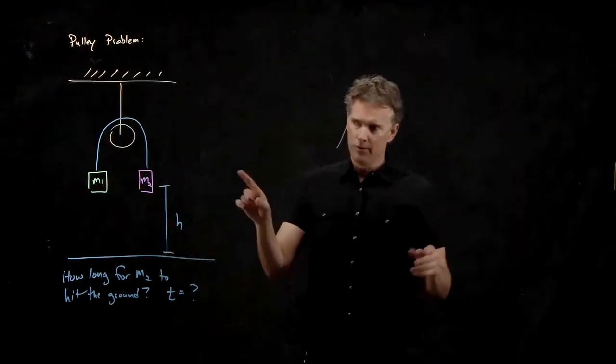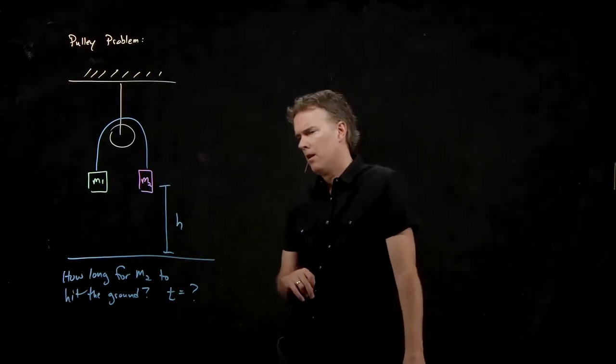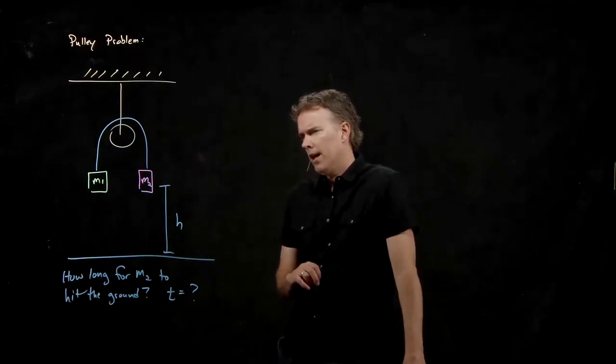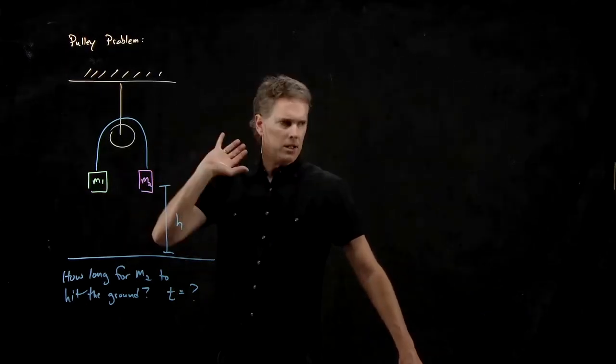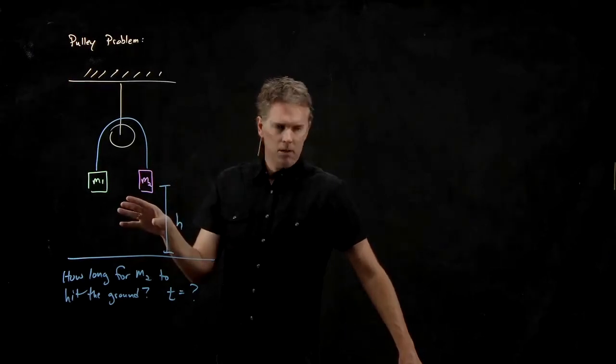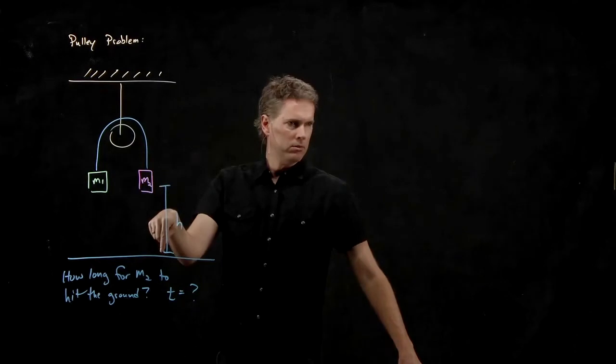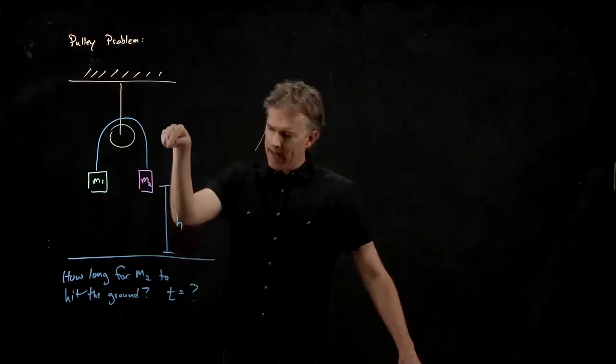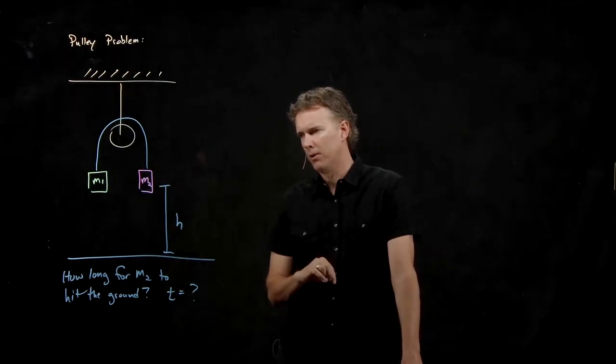So when we're all done, hopefully that's one of the limits of the solution. The other is if M1 is basically zero, then M2 should be in freefall. It should be accelerating at G. So let's make sure that that is one of the limits of our solution as well.